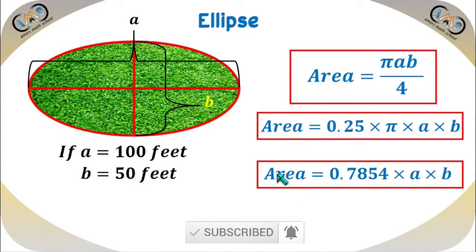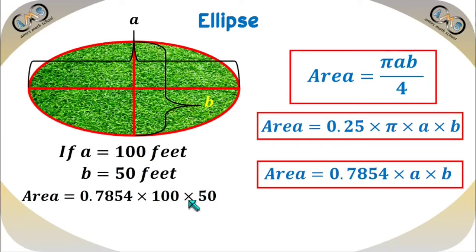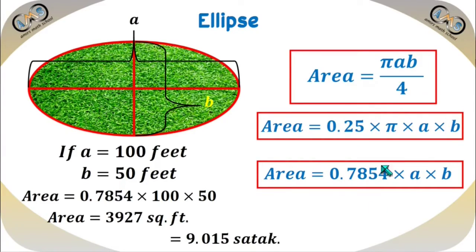According to this formula, if we apply 0.7854 times 100 times 50, that gives the area of 3927 square feet. And if we divide this value by 435.6 — since 435.6 square feet is equal to 1 satoq — that will give 9.015 satoq.